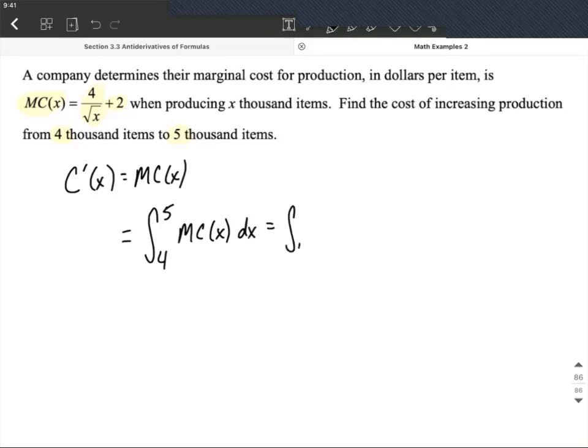In our case, that's going to be going from 4 to 5, and then our marginal cost function will be 4/√x + 2 in the integrand with dx after it. Now before we integrate this, I'm going to rewrite that square root as x to the 1/2 power, so 4 over x^(1/2) plus 2.